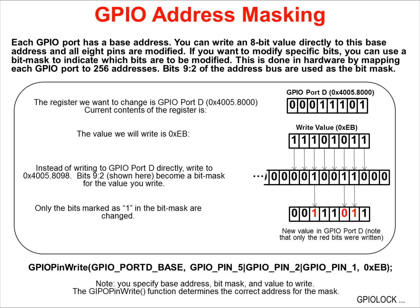The GPIO pin-write API uses the pin mask and the base address to form the address that allows us to write to the specified pins — in this case, pins 1, 2, and 5. We can then write or read from these pins only. You should appreciate that this is not a software masking trick. This technique is completely in the hardware.